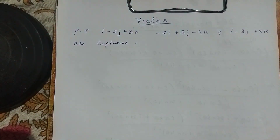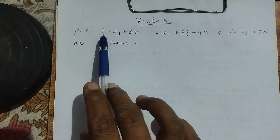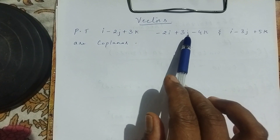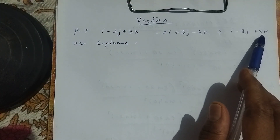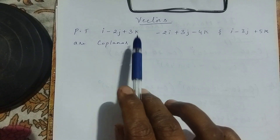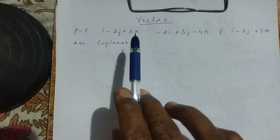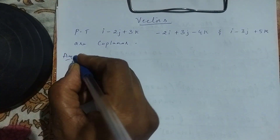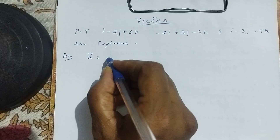Hello, welcome to my channel. Today we will learn about vectors. We need to prove that i minus 2j plus 3k, minus 2i plus 3j minus 4k, and i minus 3j plus 5k are coplanar. To prove that these vectors are coplanar, we will solve this problem step by step.